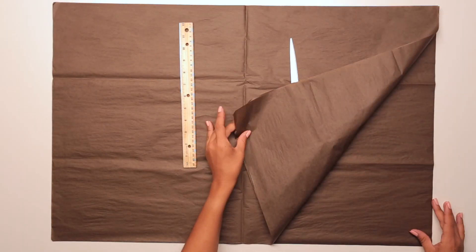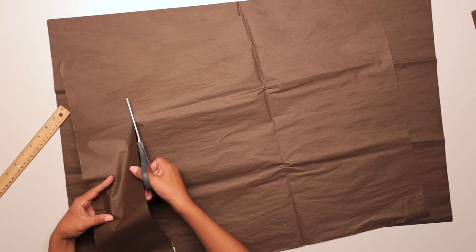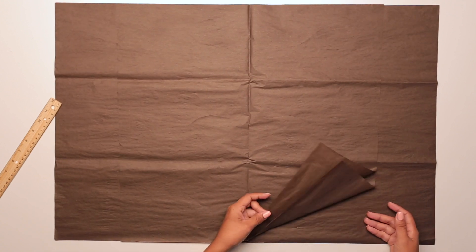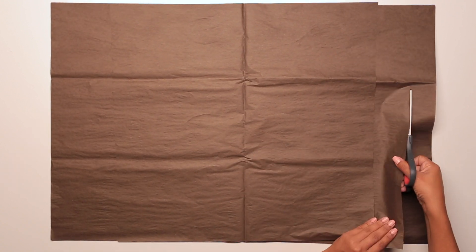Trim the top two layers 5 inches on each side. The next two layers will be a bit longer. Trim 2 inches on each side.